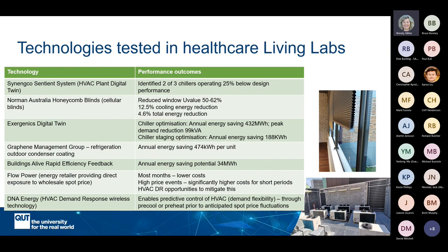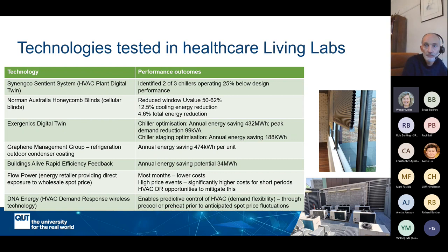Other technologies tested were digital technologies applied to HVAC plant operations — for example, Synengeco and Buildings Alive. Flow Power and DNA Energy were theoretically evaluated based on site data at Warrigal Aged Care in Shoalhaven but weren't actually deployed; the analysis examined what results would have been if the facility had deployed those technologies. Technical reports about each of these technologies, how they were applied, tested, evaluated, and the results are available on the iHub website.